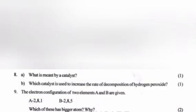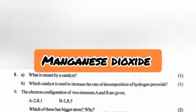Question 8B: Which catalyst is used to increase the rate of decomposition of hydrogen peroxide? Answer: Manganese dioxide.